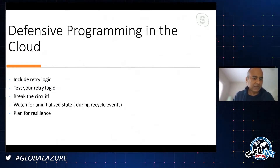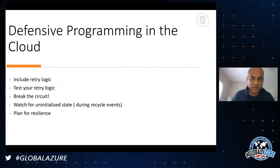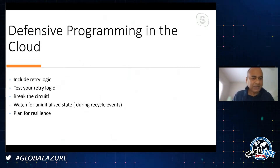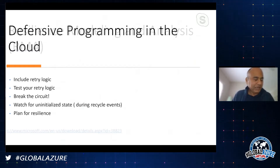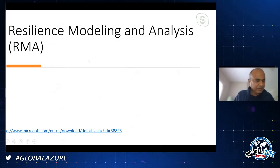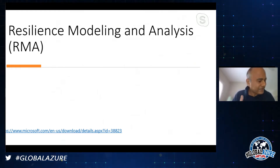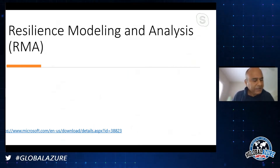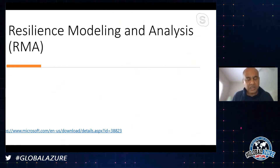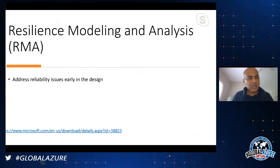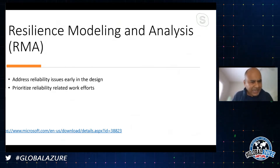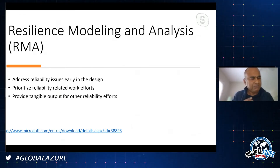The last thing in defensive programming is something called planning for resilience. Microsoft uses internally something called resilience modeling and analysis. It's a very simple method: you think about availability early in your design. When you're putting together a candidate architecture, you think about resilience - how are you going to detect failures and provide a tangible response?